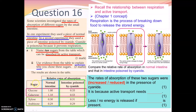Observe that the rates of absorption of the two selected sugars were reduced in the presence of cyanide. Active transport requires energy; if cyanide is present, respiration is inhibited and less energy is released, which affects the rate of absorption. That's the concept for A2. The rate of absorption of those two sugars should be lower after adding cyanide — that is your answer for A1 and A2.